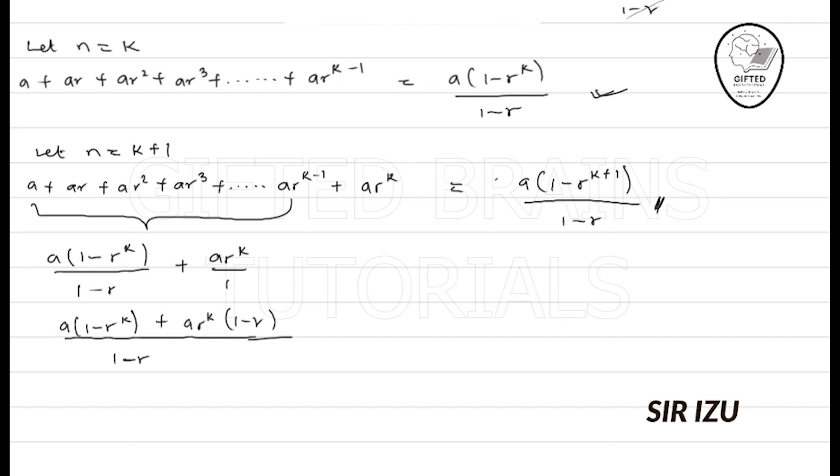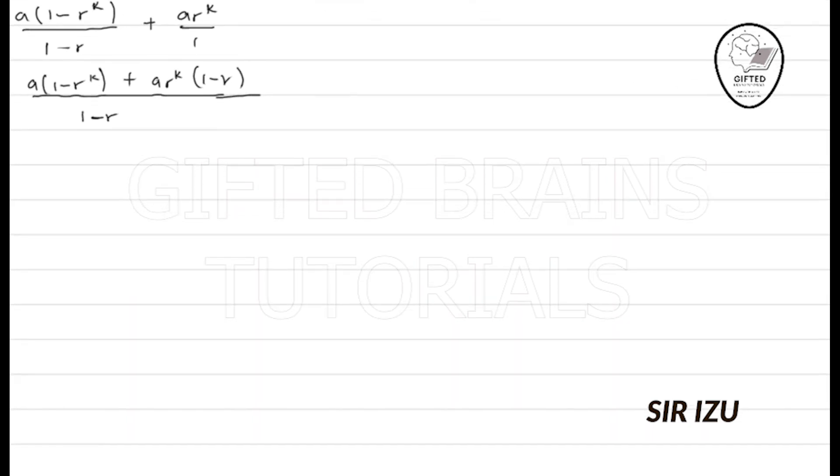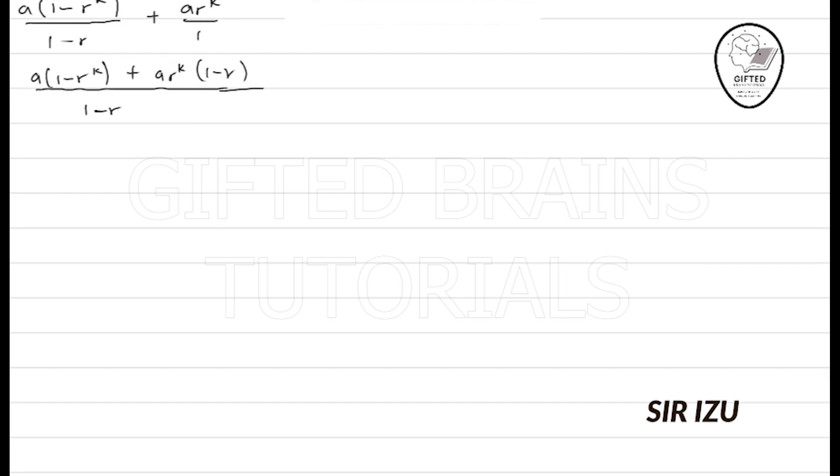So if we go ahead to multiply this, we would have A into 1 minus R raised to the power k, plus, if you expand this bracket, we have AR to the k. Then if you expand, we have minus AR to the k plus 1. This is what we would have. So at the end of the day, over, please take note, over 1 minus R, 1 minus R.